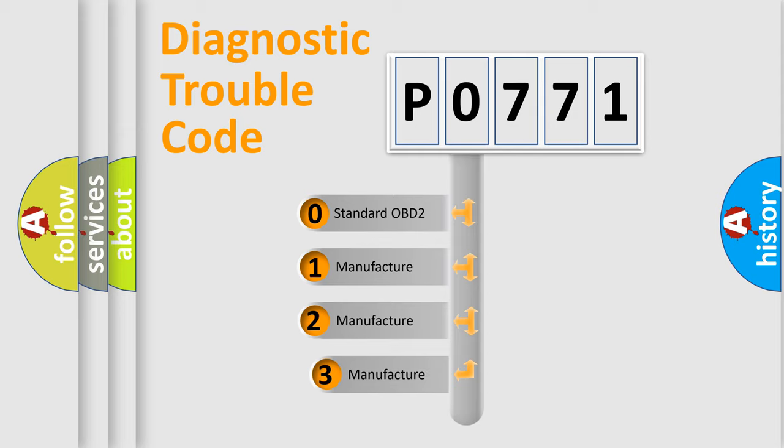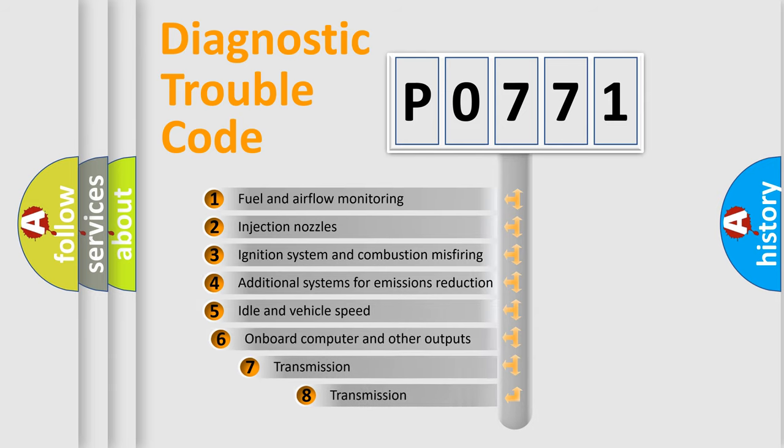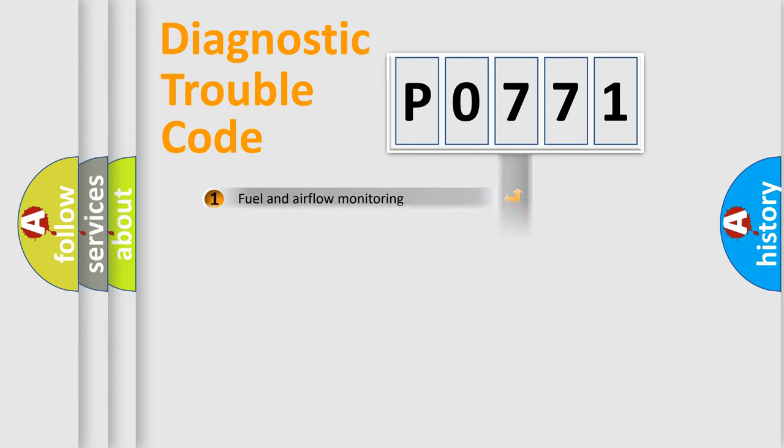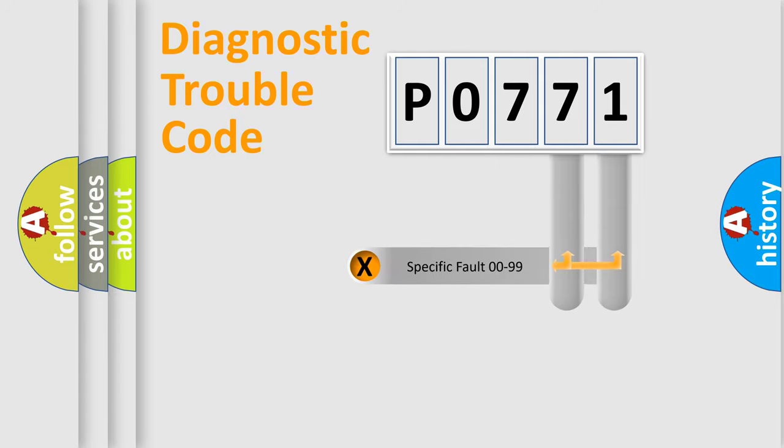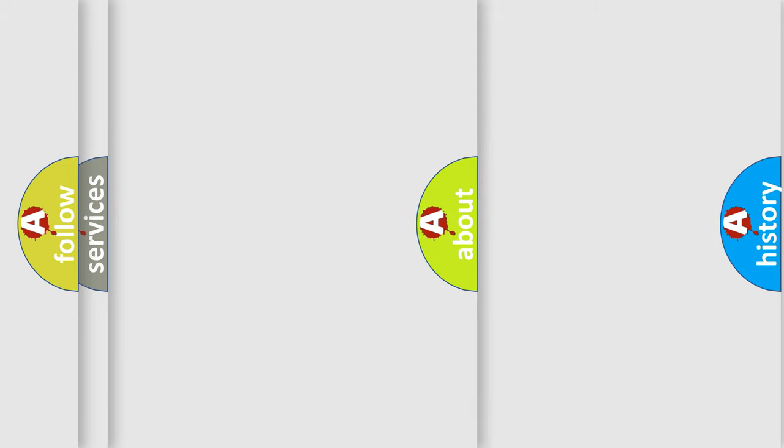If the second character is expressed as zero, it is a standardized error. In the case of numbers 1, 2, 3, it is a more prestigious expression of the car-specific error. The third character specifies a subset of errors. The distribution shown is valid only for the standardized DTC code. Only the last two characters define the specific fault of the group. Let's not forget that such a division is valid only if the second character code is expressed by the number zero.